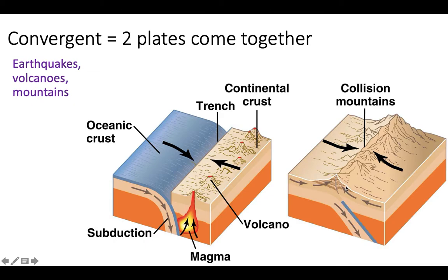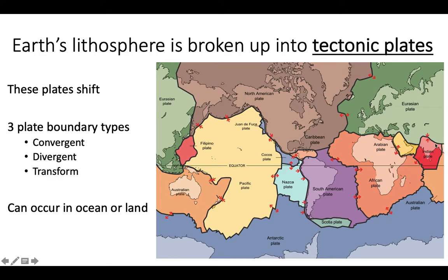Or the two plates can smash together and rise up and form a mountain range. And you can kind of see that, right? Look, this is where the Himalayas are, and this is a convergent plate boundary. This is where we're going to see a lot of mountains, right? The Himalayas.